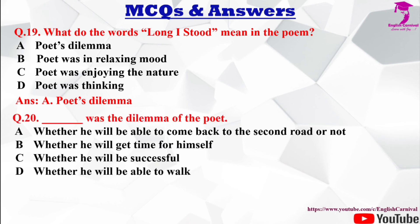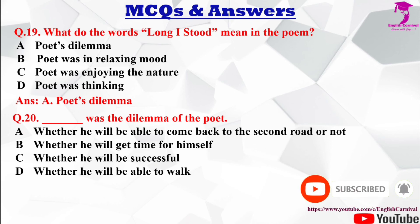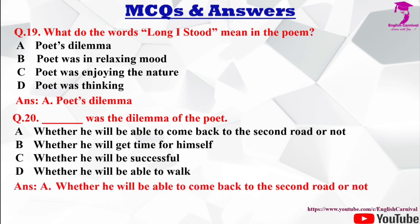Question number 20: ___ was the dilemma of the poet. Options: A) whether he will be able to come back to the second road or not, B) whether he will get time for himself, C) whether he will be successful, D) whether he will be able to walk. The correct answer is A — whether he will be able to come back to the second road or not.